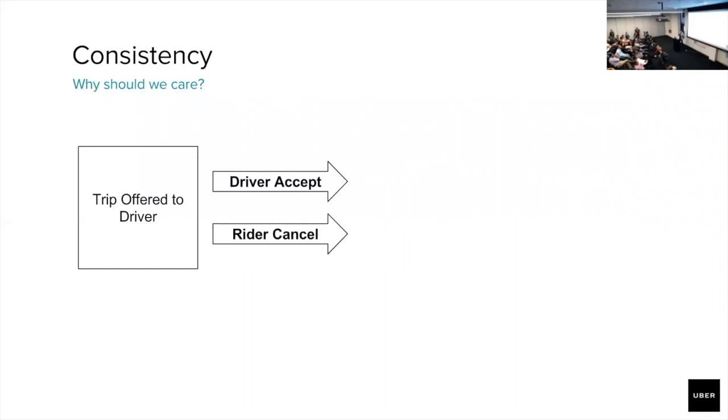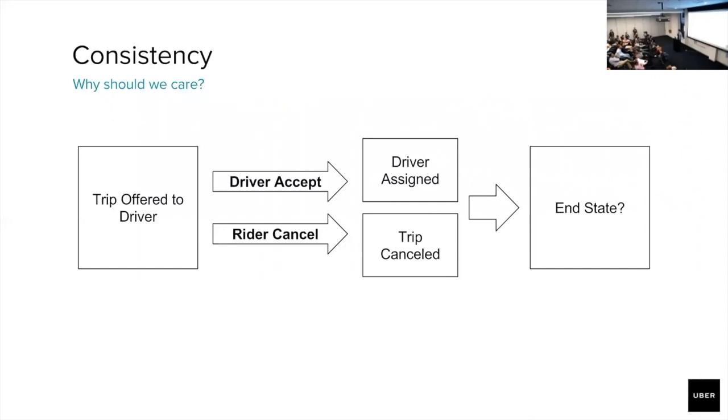Our system receives these two requests in parallel and attempts to process them. After each individual request is processed, we're in two very different states. In one state, the driver has been assigned to the trip, and we want to move on in the state machine. After the rider cancel has been processed, the trip is canceled, it's terminal. But when they're processed in parallel, which state wins? Which one's the source of truth? When there's no consistency guarantee in our system, there's just no way to know. Whichever state ends up being persisted into the data layer will become our source of truth.